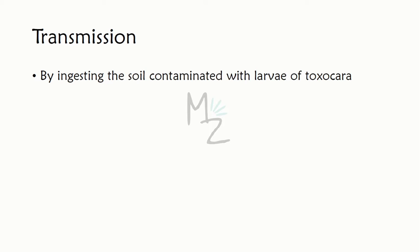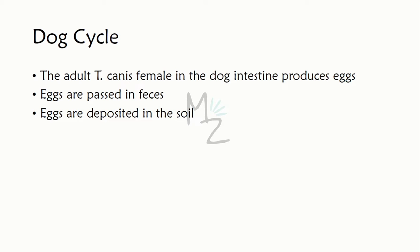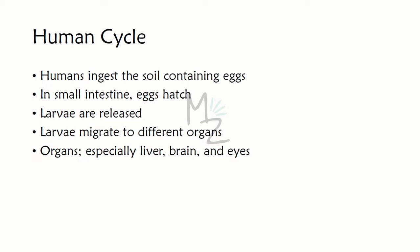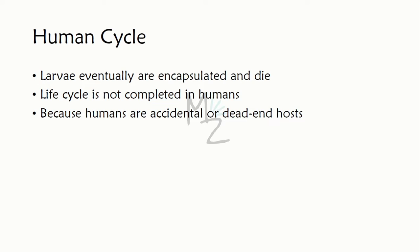Transmission occurs by ingesting soil contaminated with Toxocara larvae. The life cycle has two stages: the dog cycle and the human cycle. In the dog cycle, adult Toxocara canis females in the dog's intestine produce eggs passed into soil. Humans ingest soil containing these eggs, which hatch into larvae in the small intestine. The larvae migrate to organs like the liver, brain, and eyes, are eventually encapsulated, and die. The life cycle is not completed in humans — humans are therefore accidental or dead-end hosts.